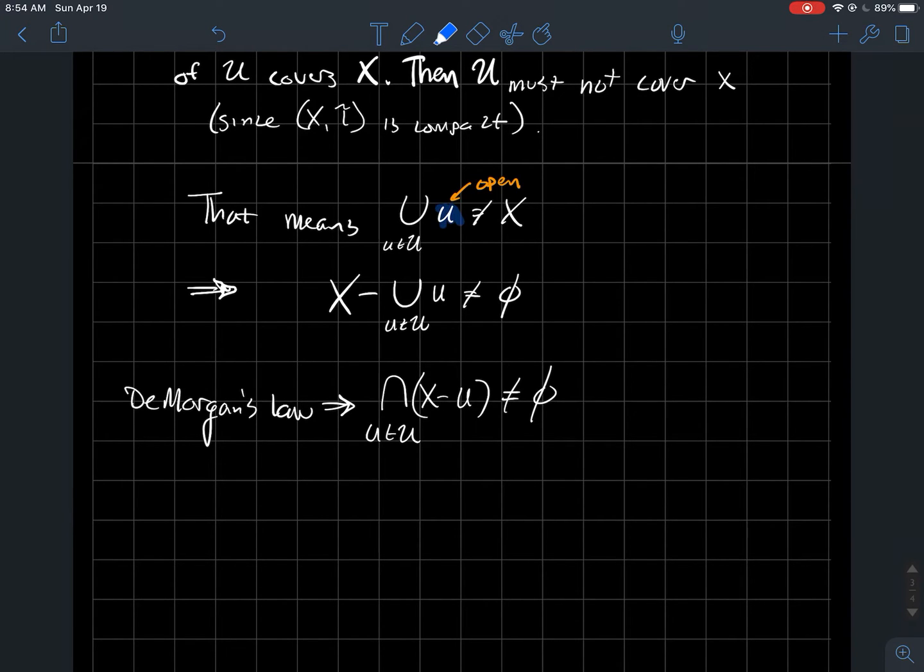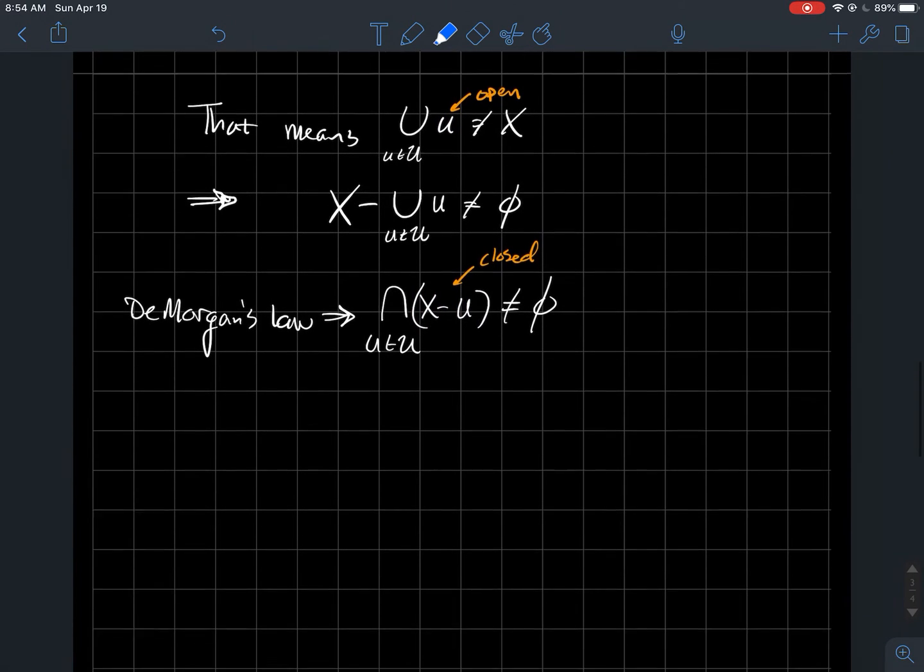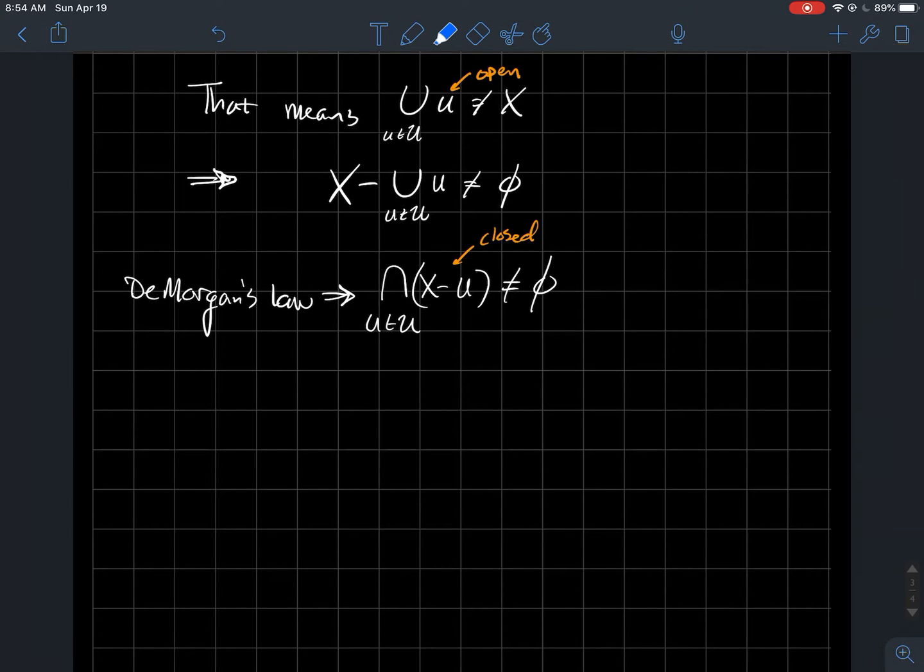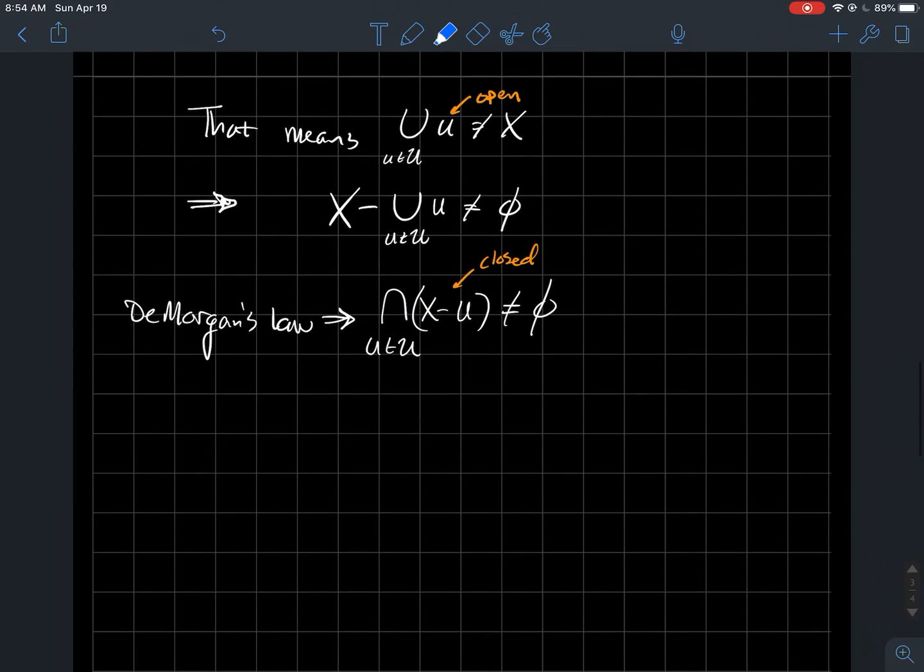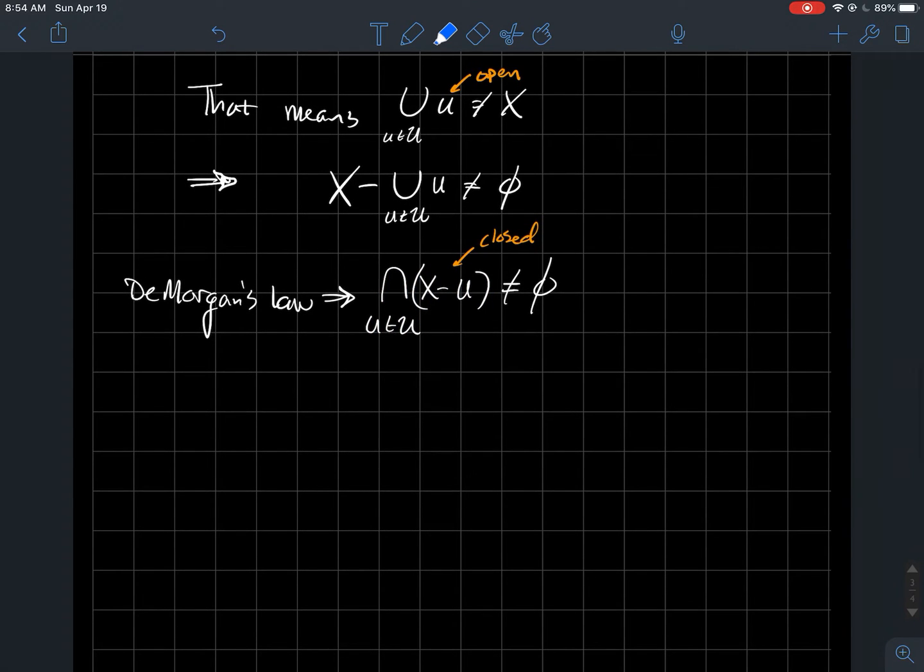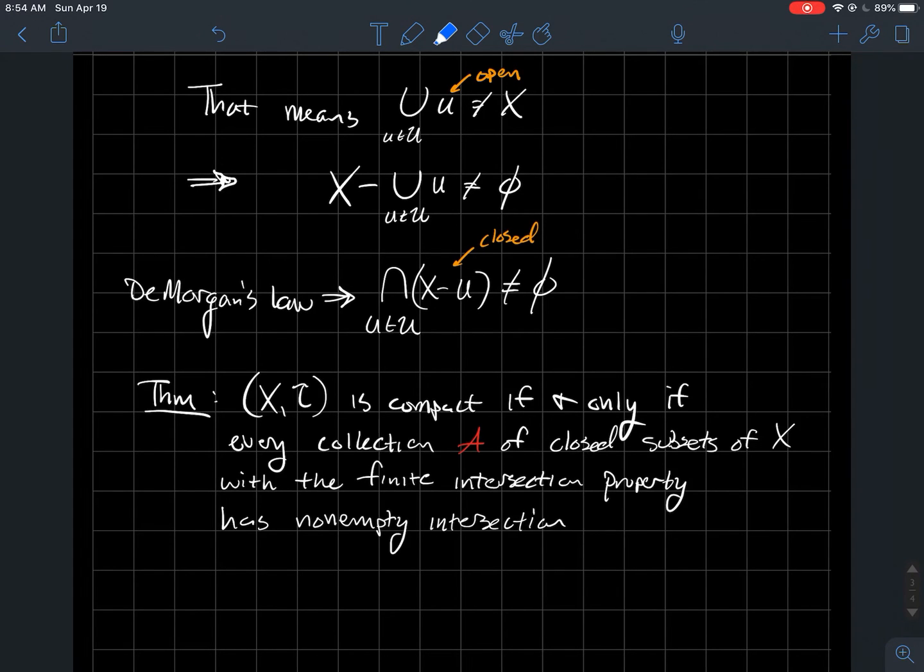Now, if U is open, what can we say about the complement X minus U? They're closed. So we have that the intersection of all of these closed sets has to be non-empty. Let's tie together what we just tried to show. We secretly related this finite intersection property to the concept of compactness. That's a big theorem.